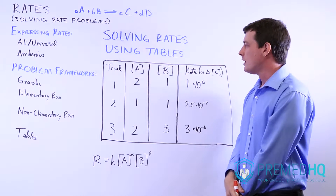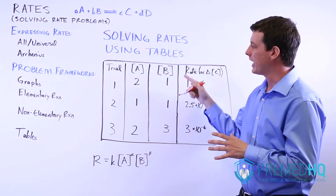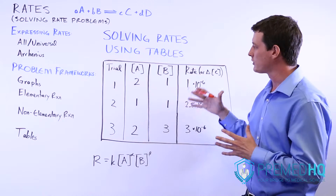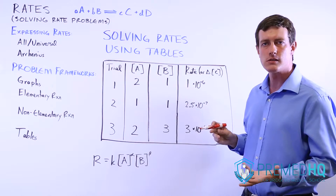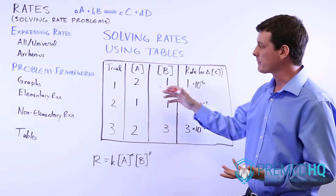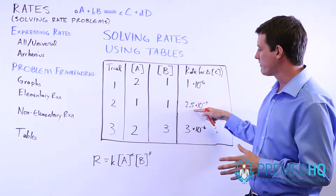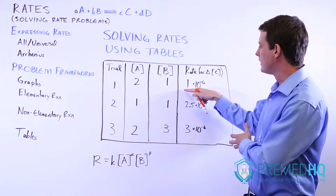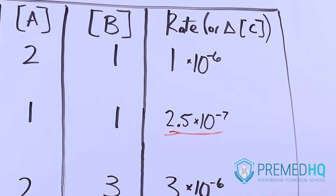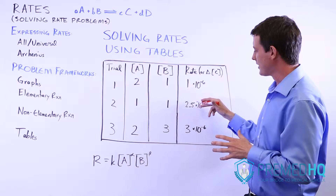When working with the table, you're essentially looking for two trials where one of the components stays the same and only one of them differs. Looking at trials two and one, B stays the same and A doubles. What happens when A doubles is that the rate goes from 2.5 times 10 to the negative 7, and increases to 1 times 10 to the negative 6. It's important to realize that 1 times 10 to the negative 6 is 4 times 2.5 times 10 to the negative 7.